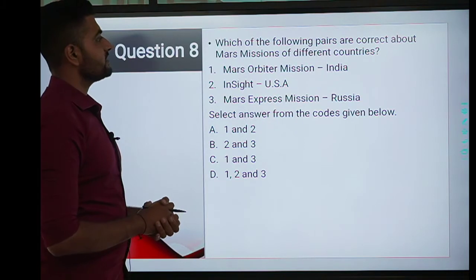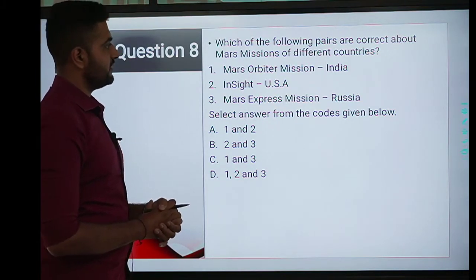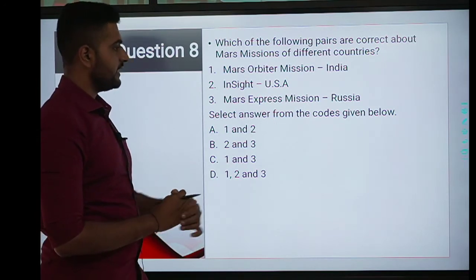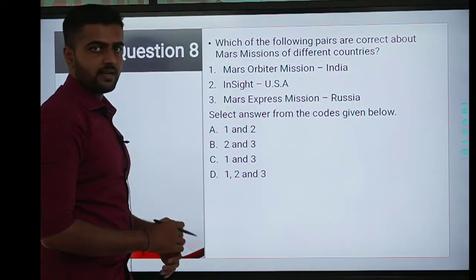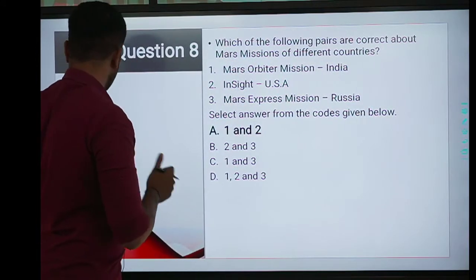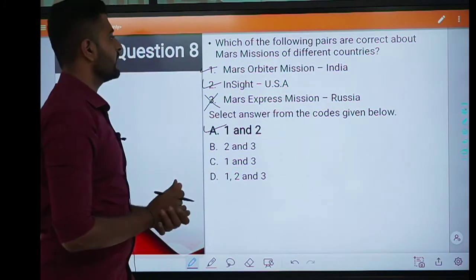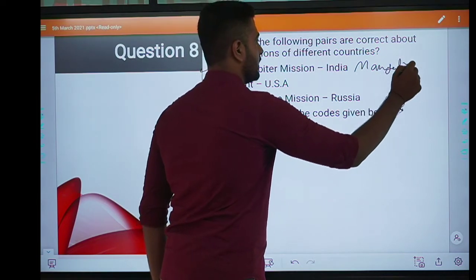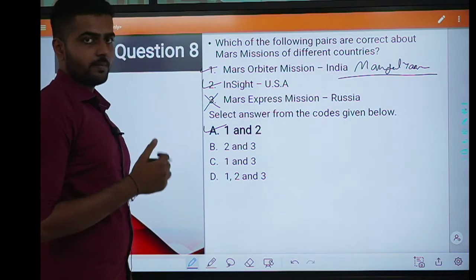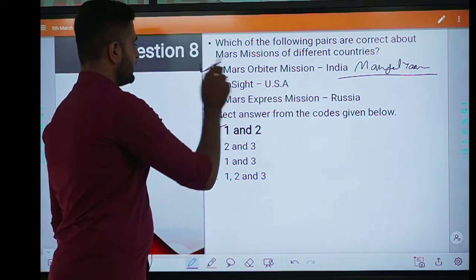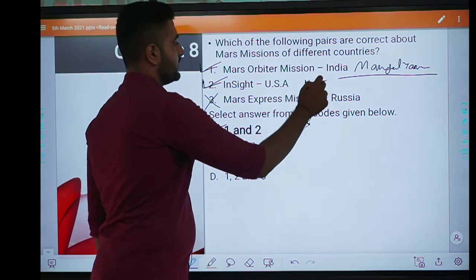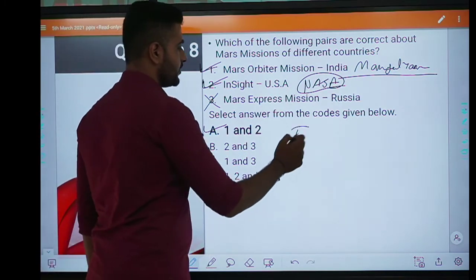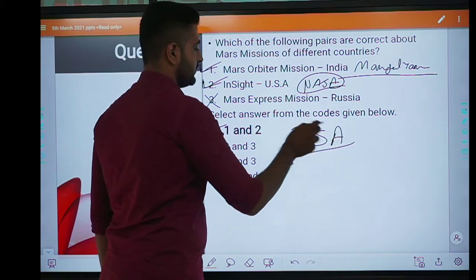Eighth question: which of the following pairs are correct about Mars missions of different countries? First is Mars Orbiter Mission — India. Second is InSight — US. Third is Mars Express Mission — Russia. The correct answer is A, 1 and 2. Third is incorrect. Mars Orbiter Mission, popularly known as Mangal Yaan, is India's mission — first is correct. InSight is a NASA mission from the USA — second is correct. Mars Express Mission is a mission of the European Space Agency, not Russia. The answer is 1 and 2.